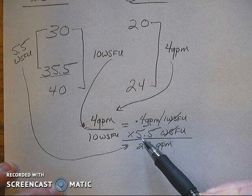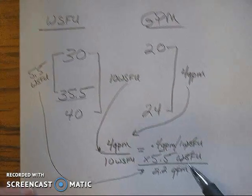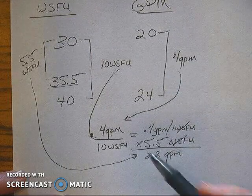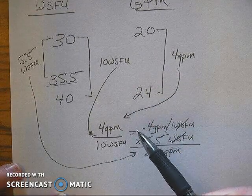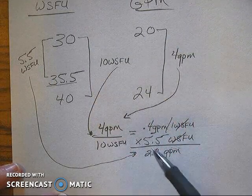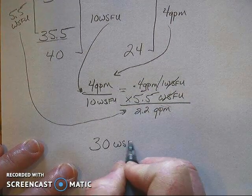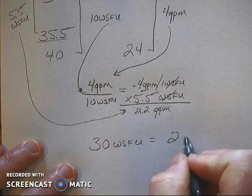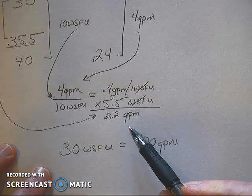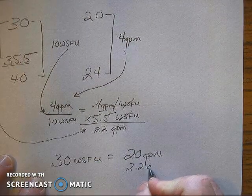In other words if I go up 5.5 WSFU on the left hand side I will go up 2.2 GPM on the right hand side. 30 WSFU equaled 20 GPM. So 30 WSFU equals 20 GPM and we are going to go up 2.2 GPM.